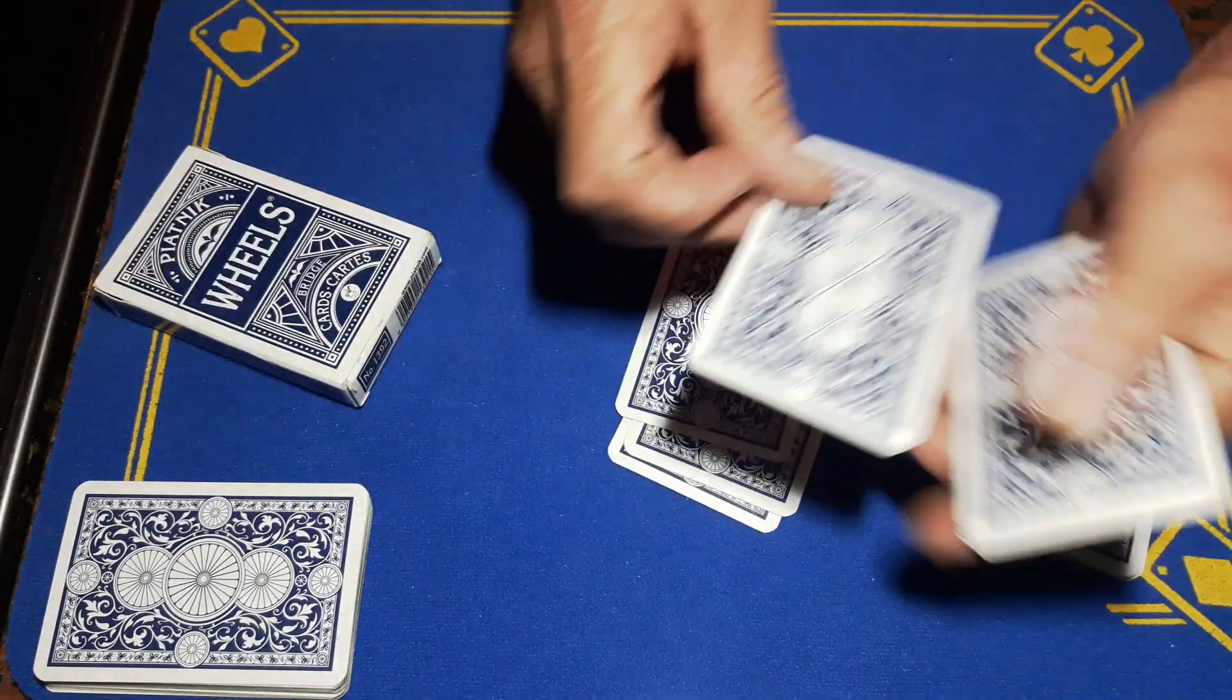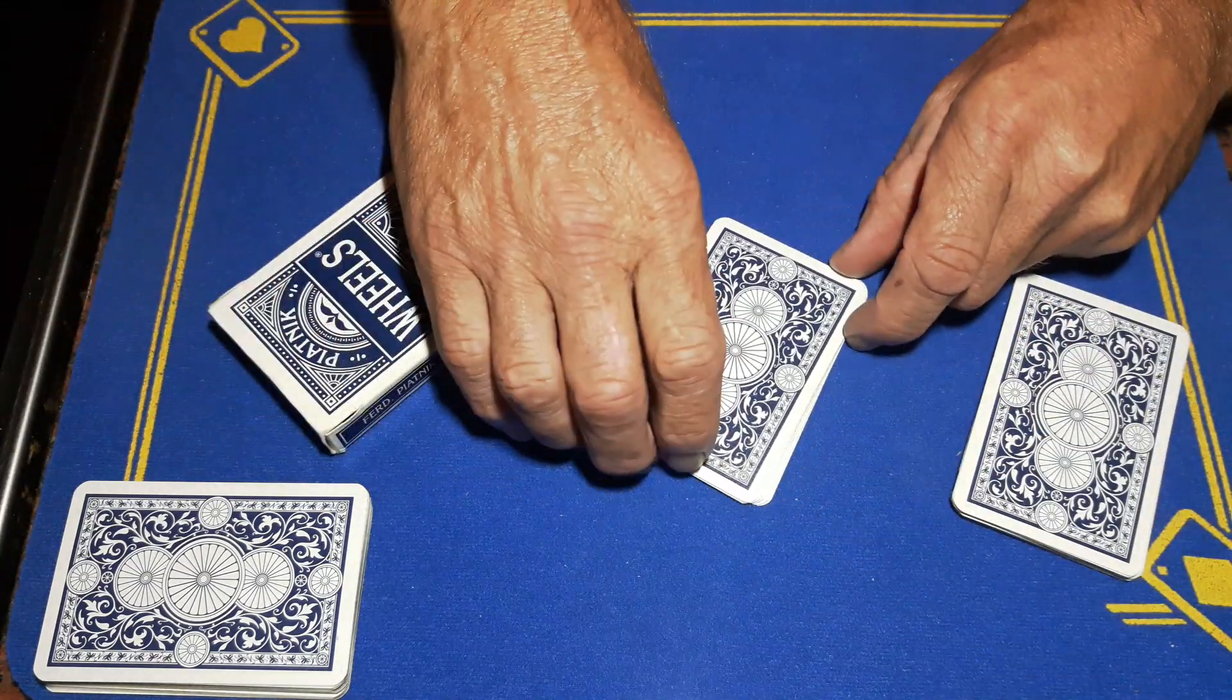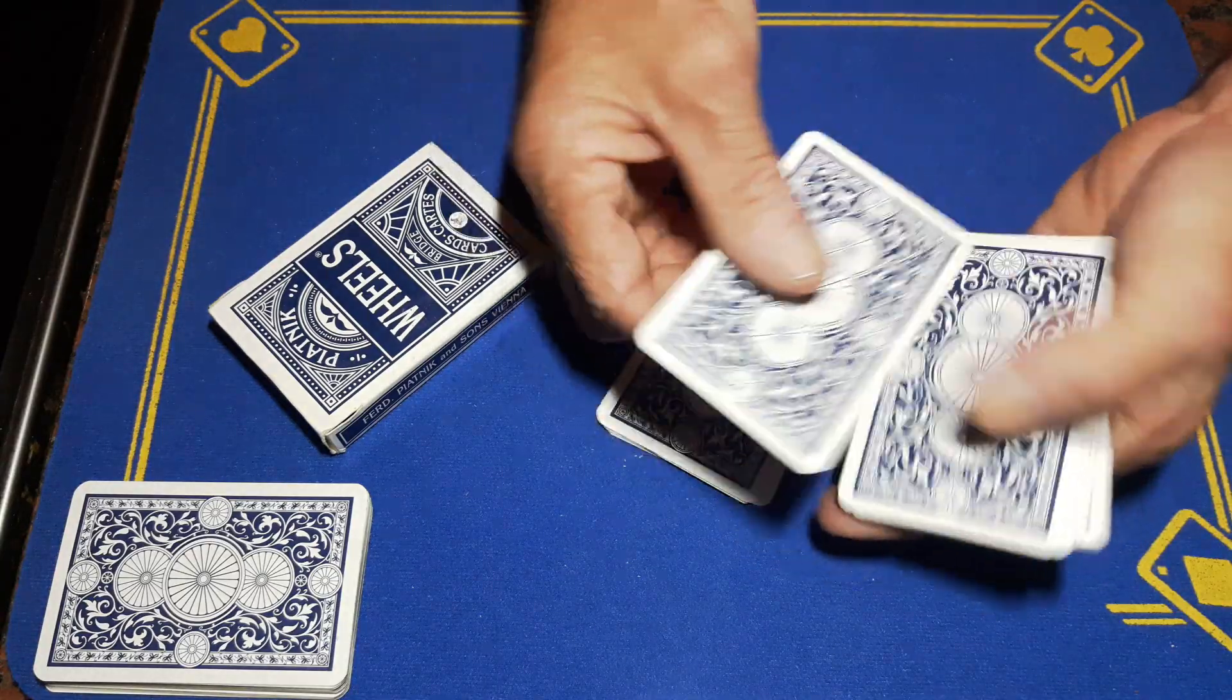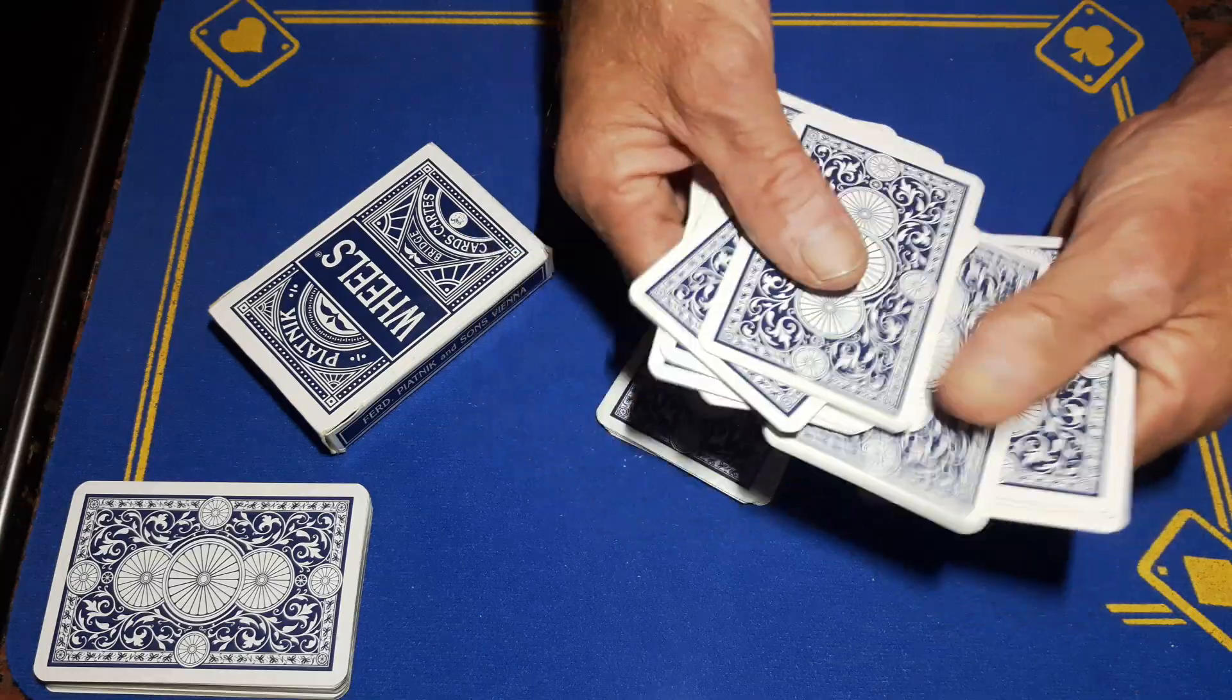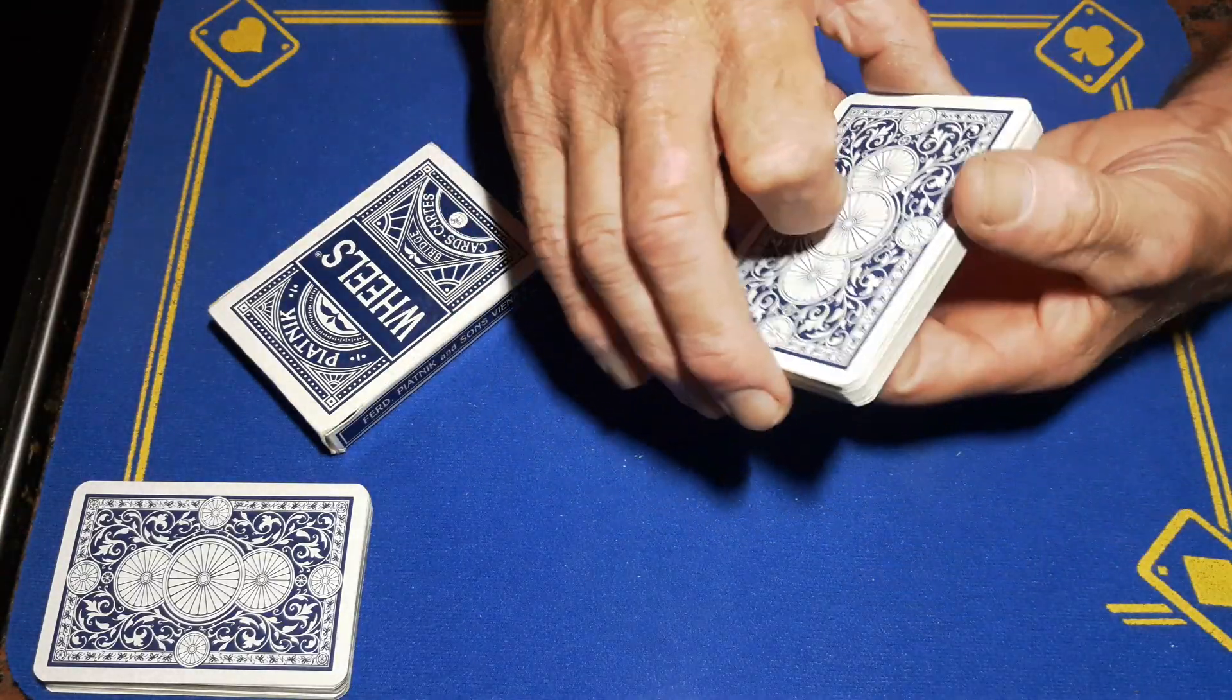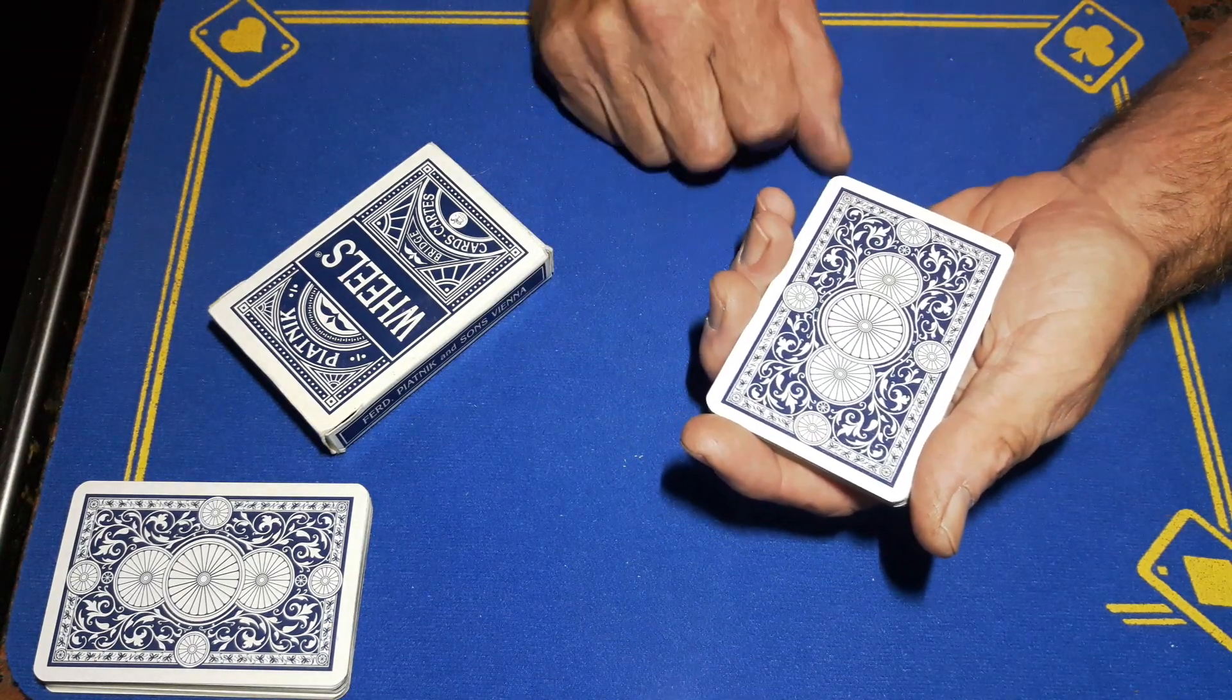One, two, three, four, five, six, seven. We've now only got seven cards, so there can't be thirteen in my hand, surely. One, two, three, four, five, six, seven, eight, nine, ten, eleven, twelve, thirteen. I'm going to try and do this again. I'm going to take three cards from this pile.